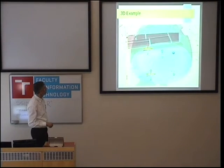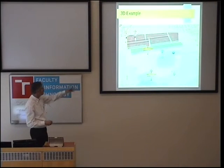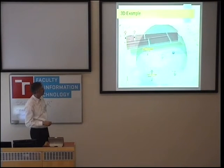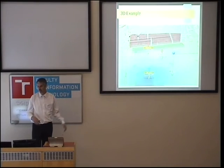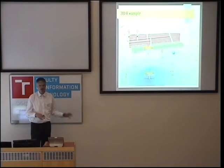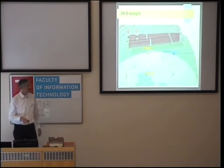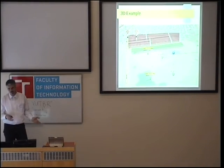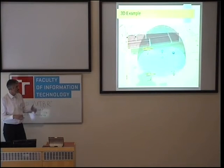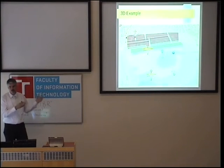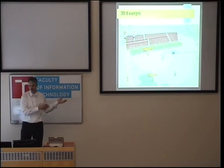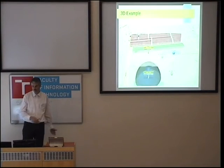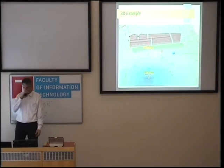The red blocks represent houses that are actually blocking the signals. This is just an example I configured to show you that 3D visualizations are possible.